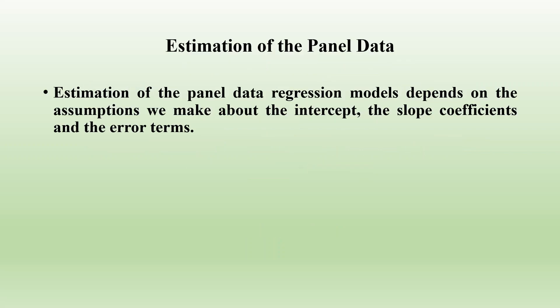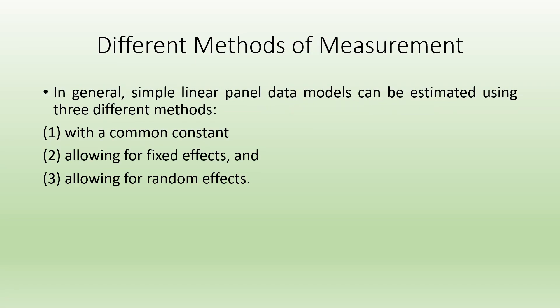The estimation of the panel data regression model depends on the assumptions we make about the intercepts, the slope coefficients, and the error terms. In general, simple linear panel data models can be estimated using three different methods: one, a common constant; two, allowing for fixed effects; three, allowing for random effects.